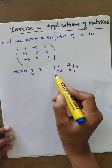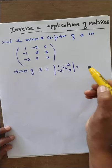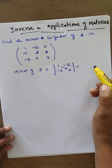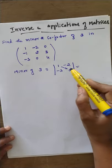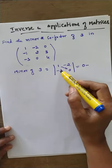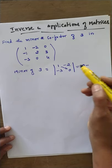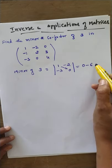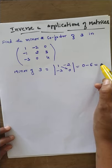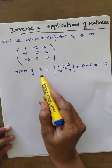Now we find the determinant value of that matrix. Using cross multiplication for a second-order determinant: 1 × 0 = 0, minus (-2) × (-3) = 6, so 0 minus 6 = -6. This is the minor of 3.